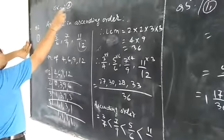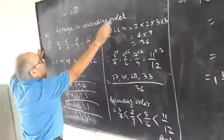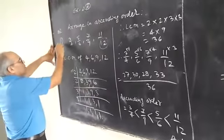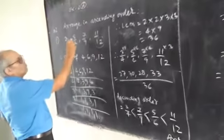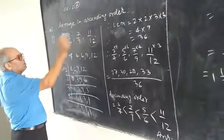Exercise 2A, Question No. 2. Arrange in ascending order. First part: 3 upon 4, 5 upon 6, 7 upon 9, 11 upon 12.